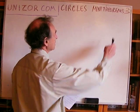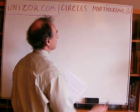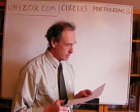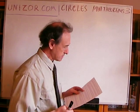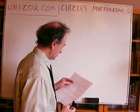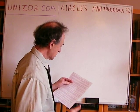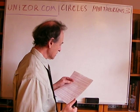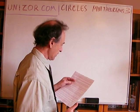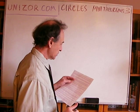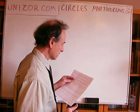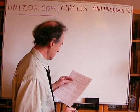This is series number three among mini theorems about circles. Prove that the shortest distance between two circles lying outside of each other is the segment between them lying on the line connecting their centers.